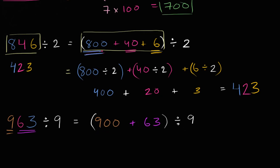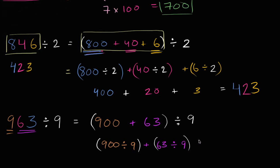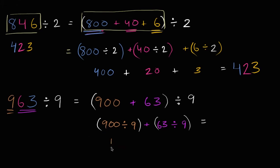This is going to be the same thing as 900 divided by 9 plus 63 divided by 9 — I just distributed the division by 9. And what is this going to be equal to? Well 900 divided by 9 is 100, and 63 divided by 9 is 7. So this is going to be 100 plus 7, or 107.